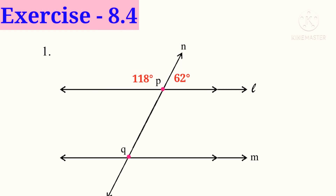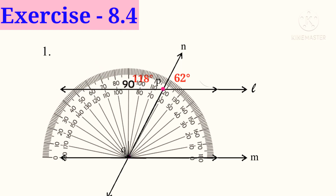Now place the protractor on the line M at the center point Q. For left side angle, see the upper scale: 0, 10, 20, and so on. 8 lines after 110, that is 118 degrees. And for the right side, see the lower scale: 0, 10, 20, and so on. 60 after 2 lines, that is 62 degrees.